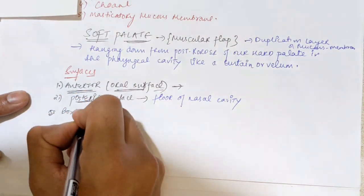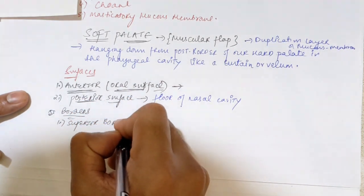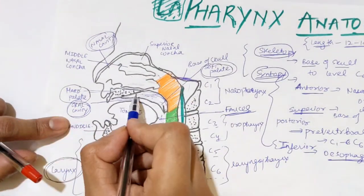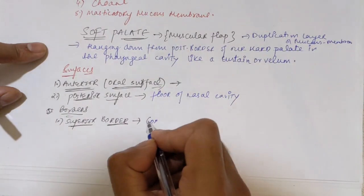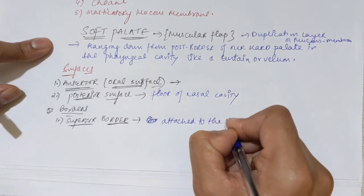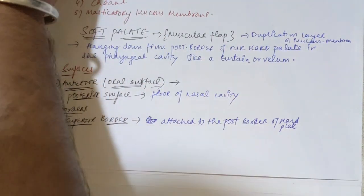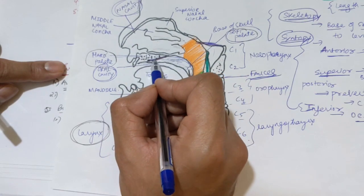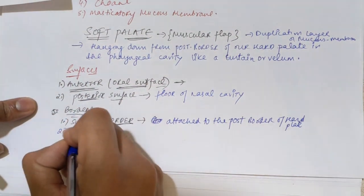Now the soft palate has two borders. The first is the superior border, which is attached to the posterior border of the hard palate. In this horizontal diagram, you can see this upper line is the superior border, and it is attached to the posterior border of the hard palate — this is where the hard and soft palate connect.